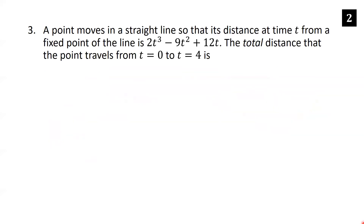A point moves in a straight line so that its distance at time t from a fixed point of the line is 2t cubed minus 9t squared plus 12t. The total distance the point travels from t equals 0 to t equals 4 is? We can't simply plug in 4 and 0 and subtract, because the point could be changing direction. We need to check where the velocity is 0, since that's where direction changes occur.